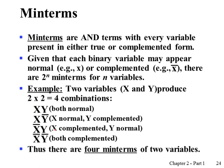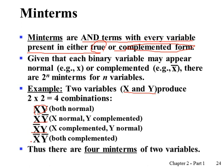Minterms are defined as AND terms with every variable present either in true or complemented form. For example, if we have a two-variable function X and Y, then minterms are AND terms with every variable present either in true or complemented form, giving us four possible combinations. In general, if we have n variables, we will have 2 to the n minterms.